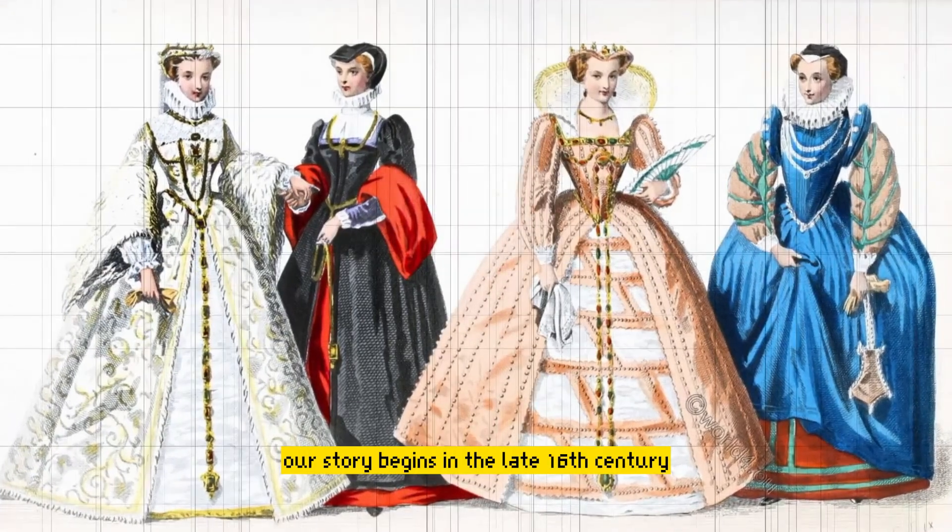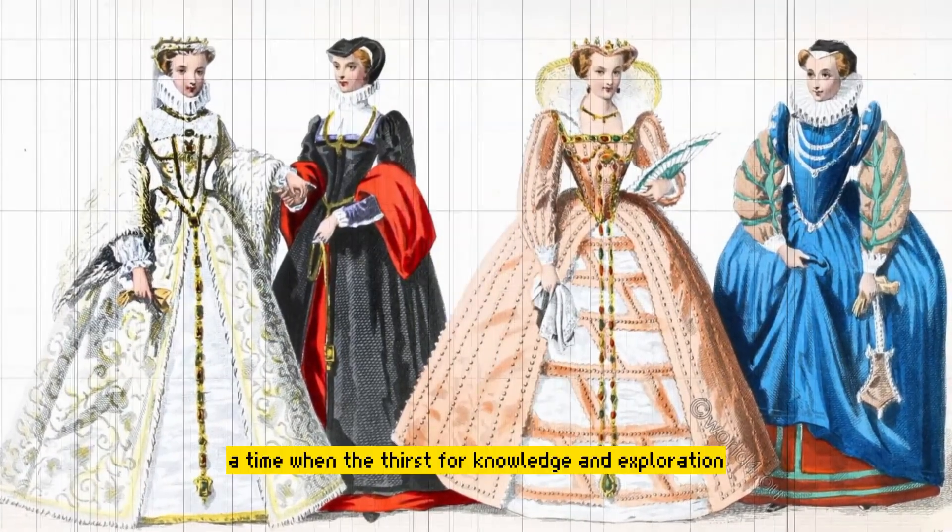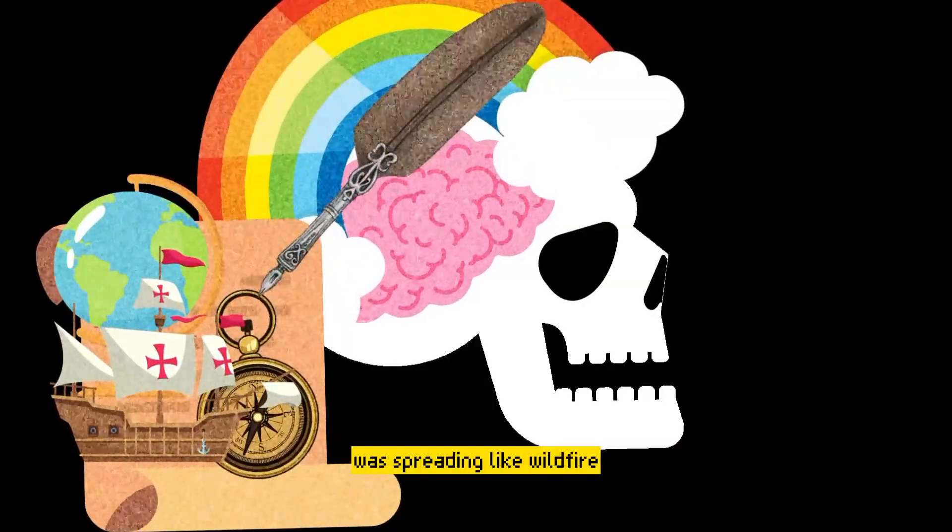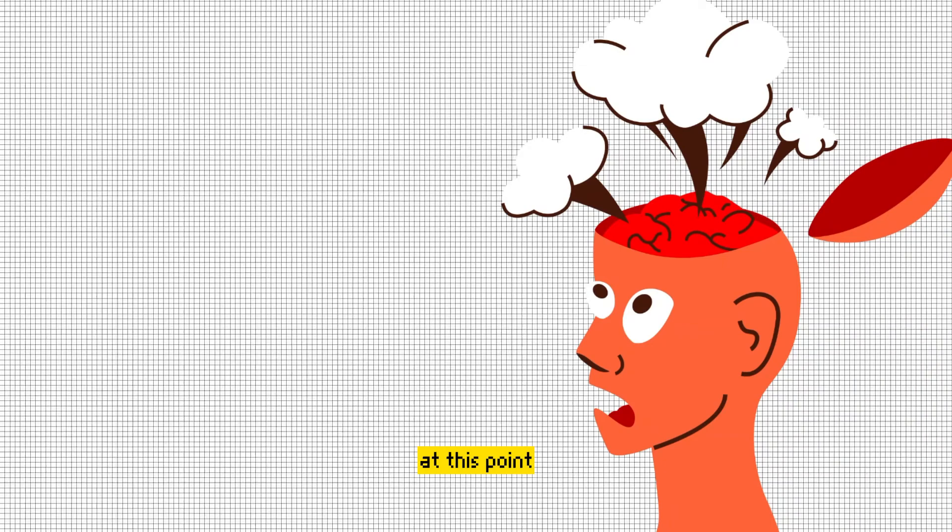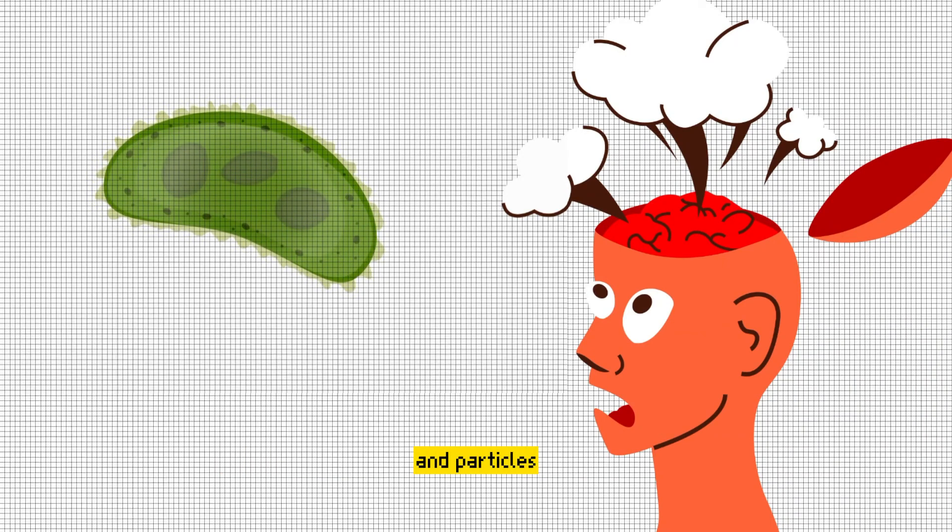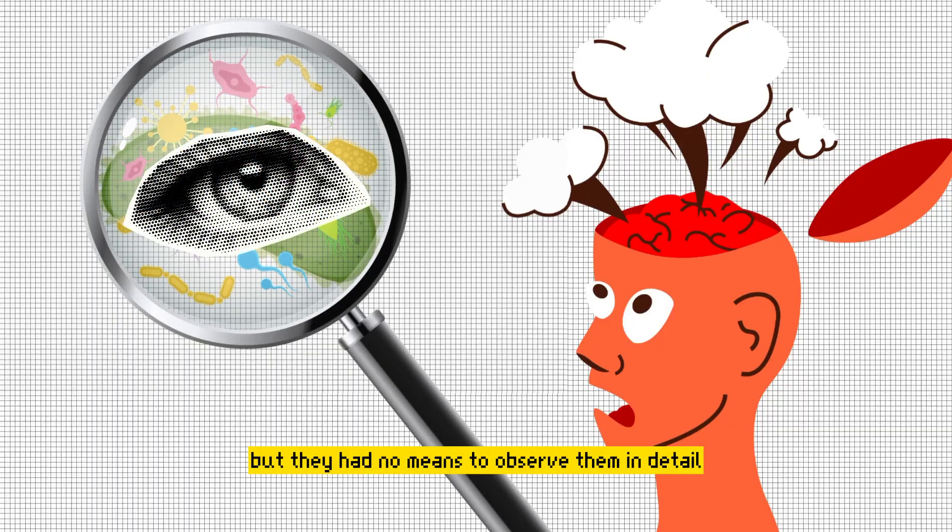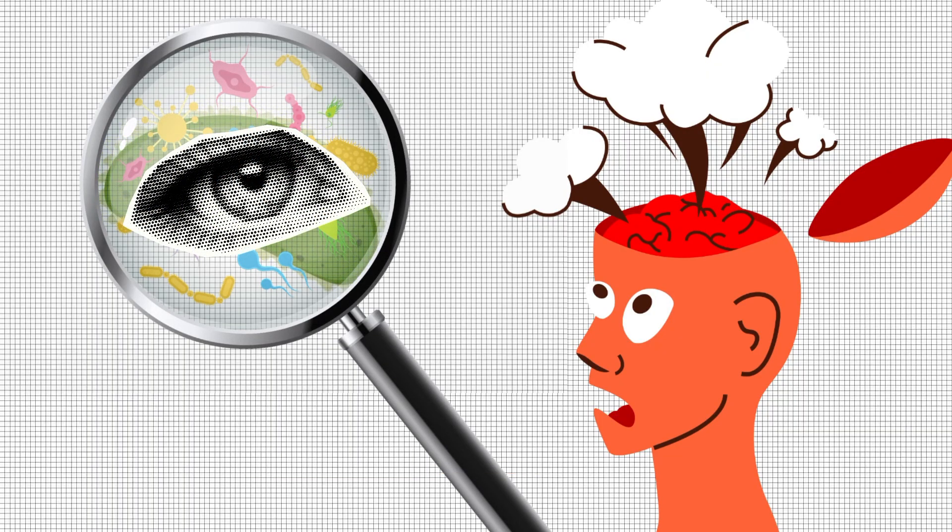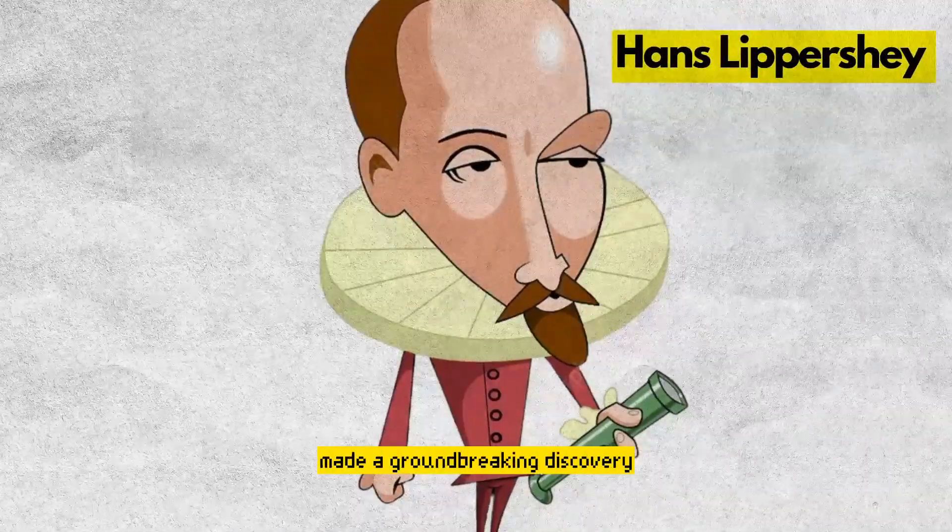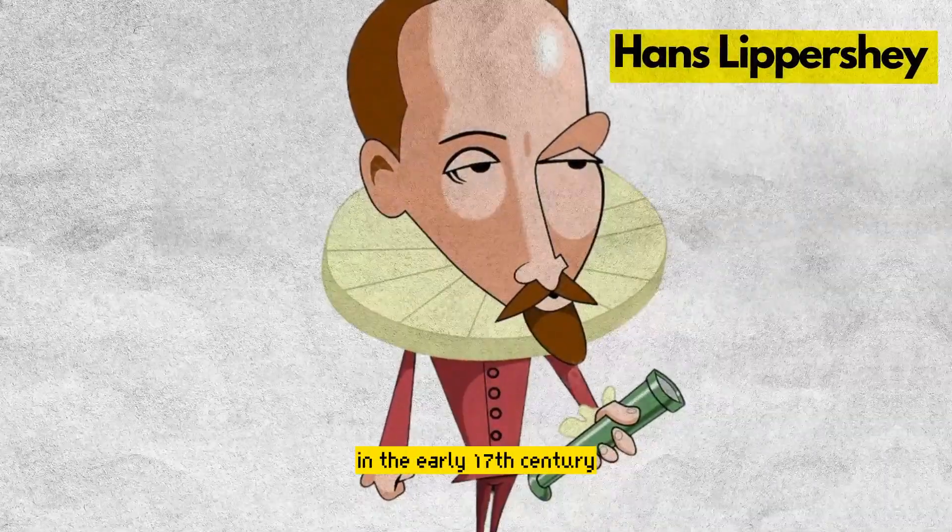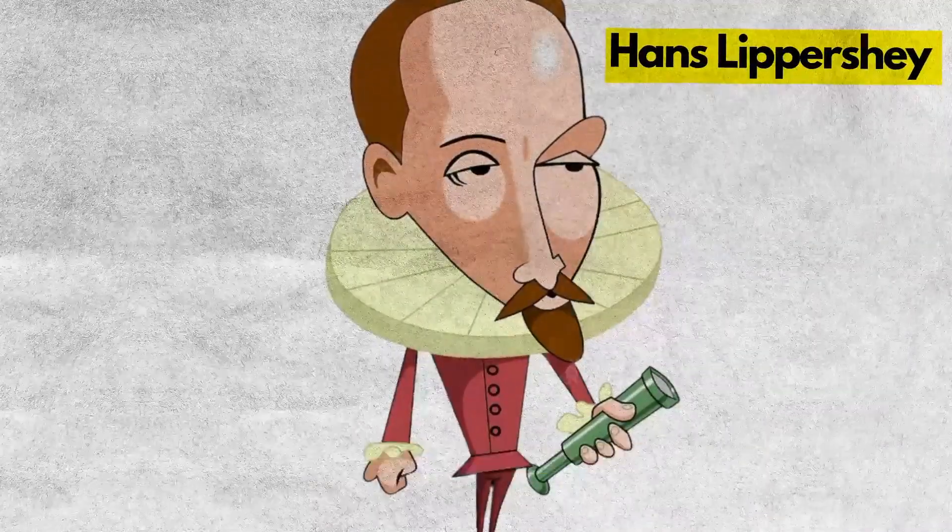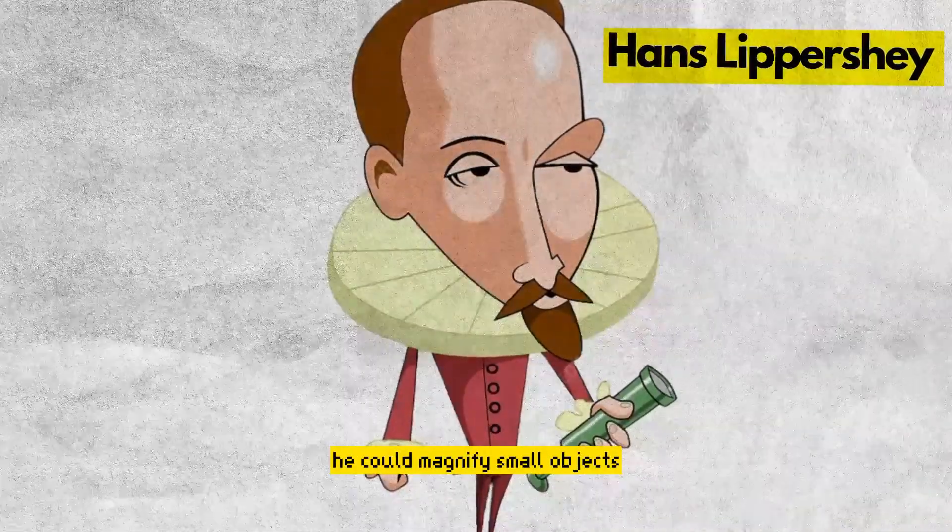Our story begins in the late 16th century, a time when the thirst for knowledge and exploration was spreading like wildfire. At this point, people were aware of the existence of small organisms and particles, but they had no means to observe them in detail. This changed when a Dutch eyeglass maker named Hans Lippershey made a groundbreaking discovery in the early 17th century. He realized that by combining lenses, he could magnify small objects.